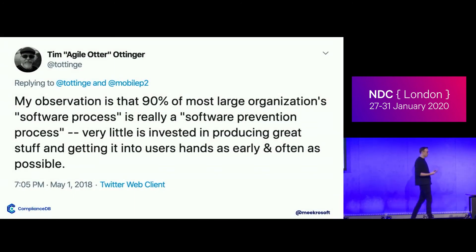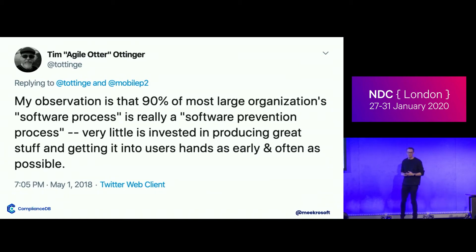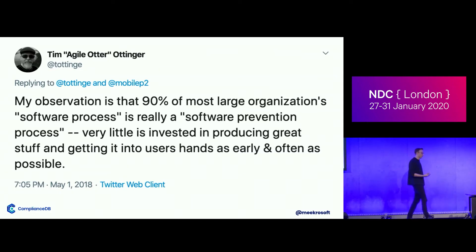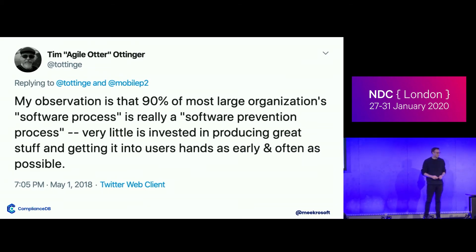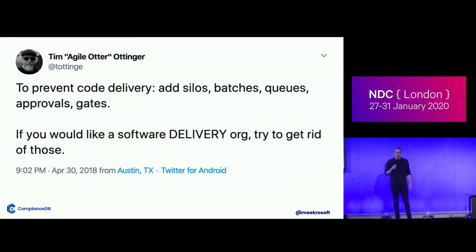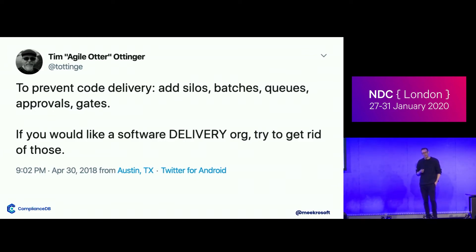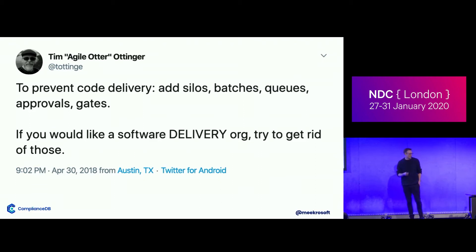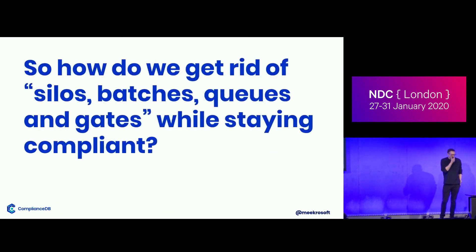The problem with this process is that it's slow — really, really slow. Tim Ottinger talks about how software process is really a software prevention process. And that's really true. If you look at the traditional ways of managing software process in regulated industries, it's basically a lot of process around stopping you getting that change into production. He says if you want to prevent code delivery, what you should do is add batches and silos and queues, approvals and gates. But these are exactly the things that you're obliged to add if you're working in a regulated industry. You're obliged to have controls, you're obliged to have gates, you're supposed to control the risk. But it does make it hard to deliver. So how do we get rid of batches, silos, and queues while staying compliant?